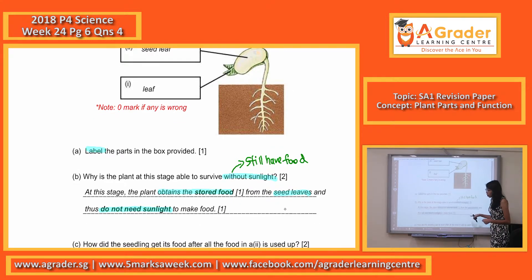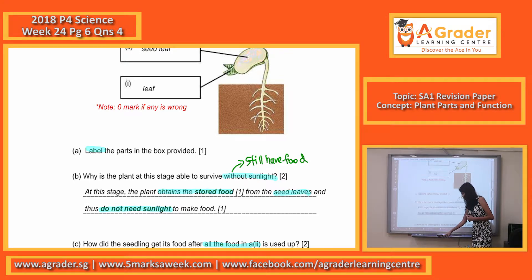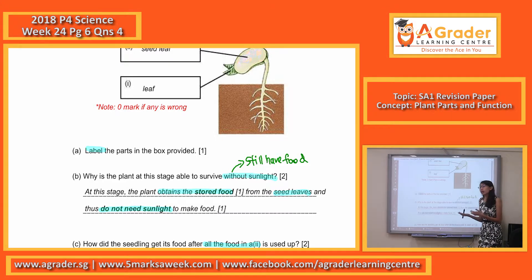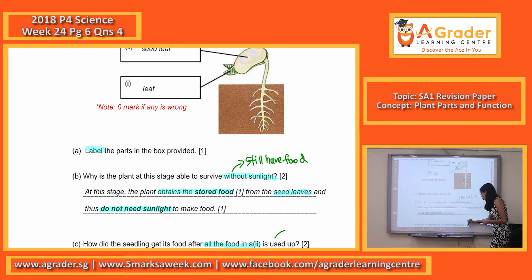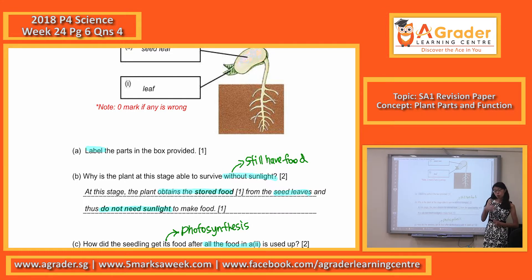Now let's look at part C: How does the plant get its food after all the food in the seed leaf is used up? Basically, once all the food in the seed leaf has been used up, you have to mention the only other way the plant can get food is by photosynthesis. Tell me the process — what is needed during photosynthesis, and which particular part of the plant helps in photosynthesis.